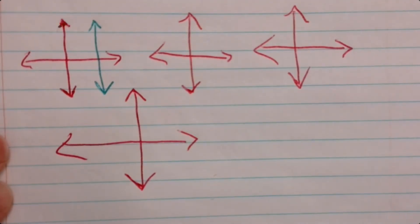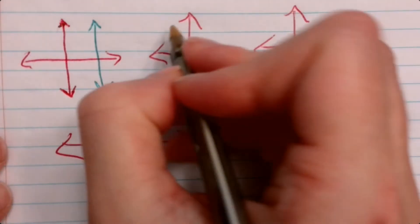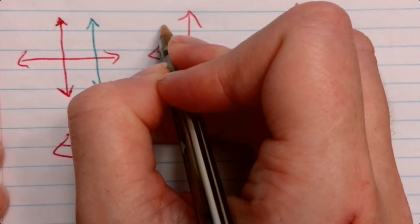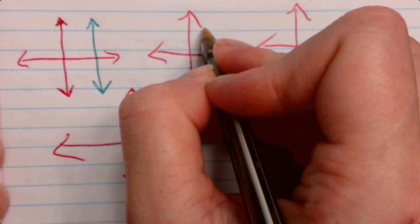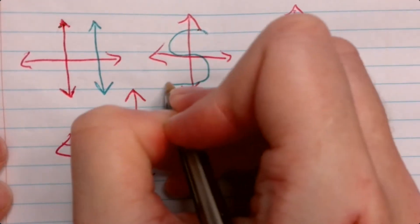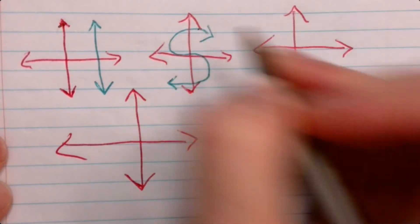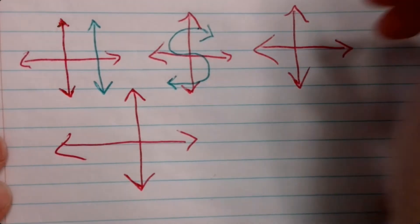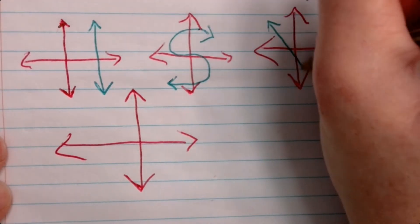In the second graph, draw a line that looks like an S. In the third one, draw one that looks like a V.